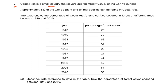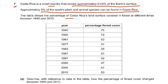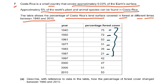Question 7: Costa Rica is a small country that covers approximately 0.03% of the Earth's surface, yet approximately 5% of the world's plant and animal species can be found there. The table shows the percentage of Costa Rica's land surface covered in forest at different times between 1940 and 2010. In 1940 it was 75%, then 72%, 53%, 31%, 26%, 21% — all decreasing. After that it starts to increase: 42%, 47%, 51%, 53%.